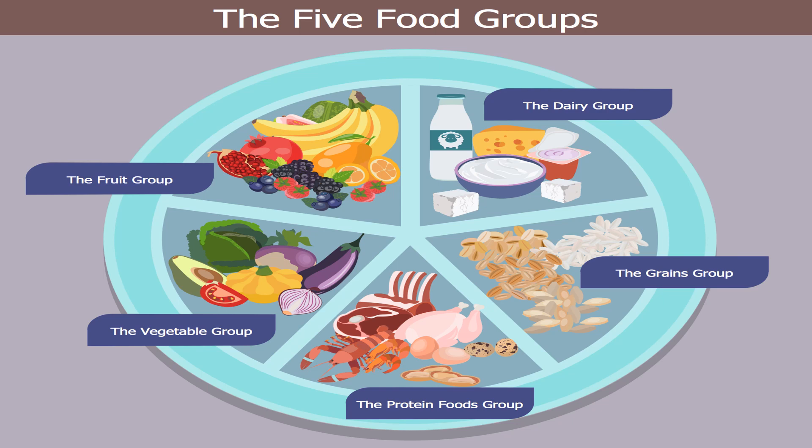Next is the vegetable group. You can see there onion, eggplant, broccoli, tomato, and different kinds of vegetables. Next is the fruit group. We have strawberry, oranges, mangoes, bananas, watermelon, and many more kinds of fruit. So these are the five food groups: dairy group, grains group, protein group, vegetable group, and fruit group.